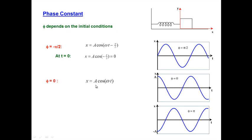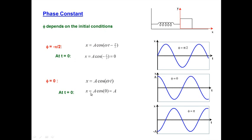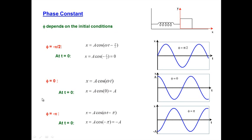Now the simplest case is a phase constant of 0. Then x would just be a cosine of omega t, and at t equals 0, x equals a cosine of 0, which is just a. This means that at t equals 0, the system is at its maximum displacement. One more possibility: phi equals negative pi. That turns the initial displacement into a cosine of minus pi, which is minus a — the system is at its maximum negative displacement. These are simply three possible values of phi; we can have lots of intermediate values.